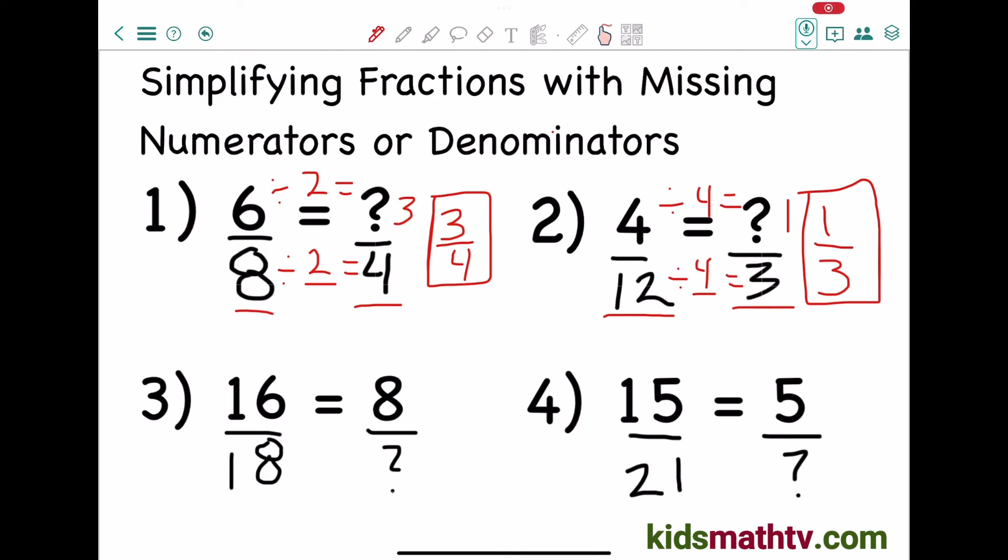Let's look at number 3. So here we have to find the denominator this time. It's the same process as number 1 and 2 except it's the opposite. We have to find the factor in the numerator. So 16 divided by what equals 8? It should be 2. So now 18 divided by 2, this is 9. So 8 over 9 is the fraction but nothing more can be simplified. So this is the final answer.